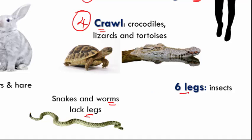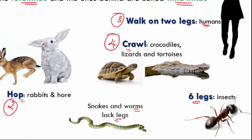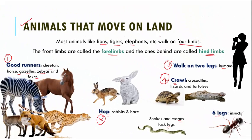The last land-movement type are insects, which have six legs. Any insect you see around your house — from a bee to an ant — has six legs, and these six legs help the animal in moving around. This completes the animals that move on land.